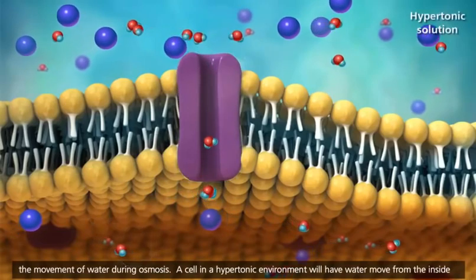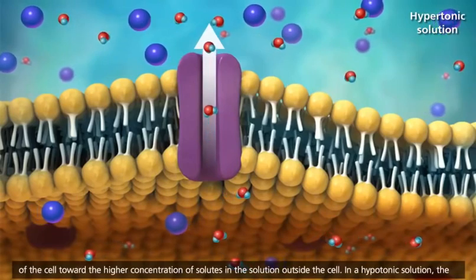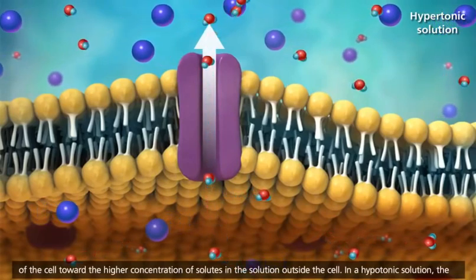A cell in a hypertonic environment will have water move from the inside of the cell toward the higher concentration of solutes in the solution outside the cell.